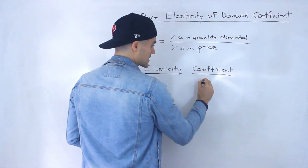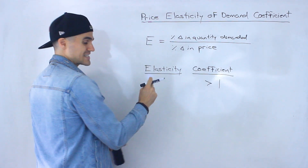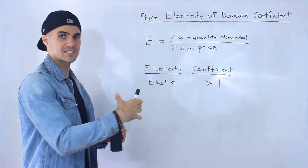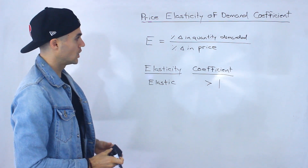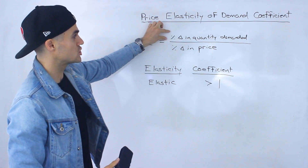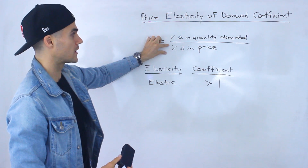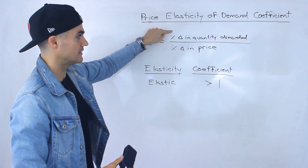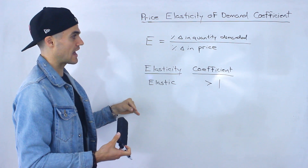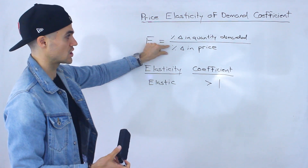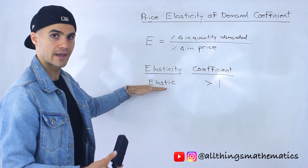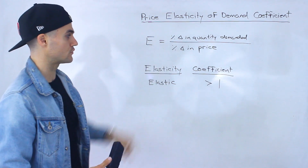If the coefficient is greater than one, then we say that good or service is elastic. When a good or service is elastic, it means it's more sensitive to changes in prices. Looking at the formula, if the coefficient is greater than one, it means the numerator is greater than the denominator — the percentage change in quantity demanded is greater than the percentage change in price. Intuitively, consumers are more sensitive to price changes because quantity demanded changes more. So we categorize that good or service as elastic if the coefficient is greater than one.